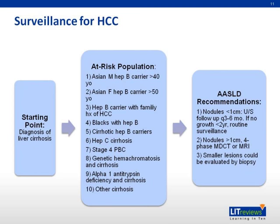Surveillance for HCC will start from when liver cirrhosis is diagnosed, with the aim of decreasing mortality from disease via early detection. Ten patient groups have been identified in whom surveillance is recommended. They include Asian men and hepatitis B carriers over 40 years old, Asian female hepatitis B carriers over 50 years old, hepatitis B carriers with a family history of HCC, Blacks with hepatitis B, cirrhotic hepatitis B carriers, hepatitis C cirrhosis, stage 4 primary biliary cholangitis, genetic hemochromatosis with cirrhosis, alpha-1 antitrypsin deficiency with cirrhosis, as well as other cirrhosis. Surveillance through AFP and ultrasound follow-up every six months was found to be the most effective strategy.